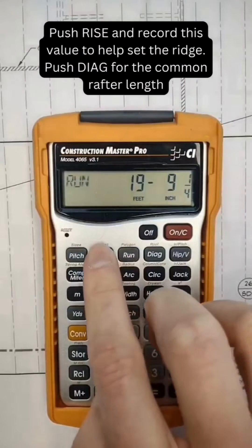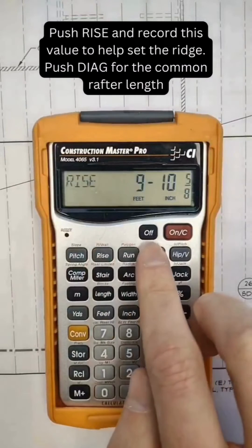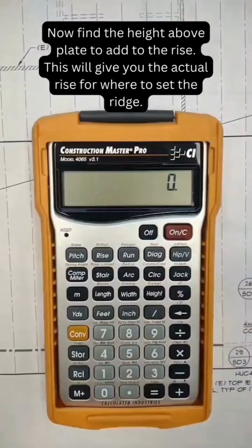Now that we have the actual run, we can find the actual rise and diagonal length for the rafter cut.